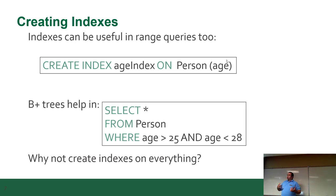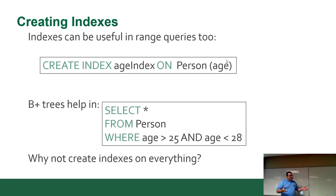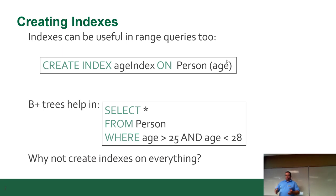Indexes also help for range queries, such as greater than 25 and less than 28. Numbers are the easiest thing to index because, well, they're numbers. Letters and strings are a little bit harder to index.